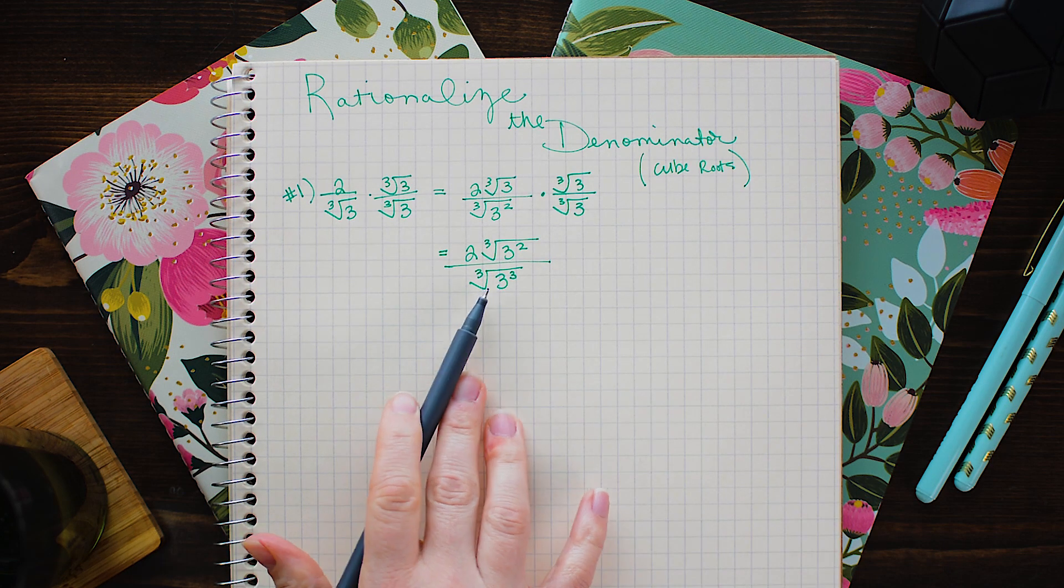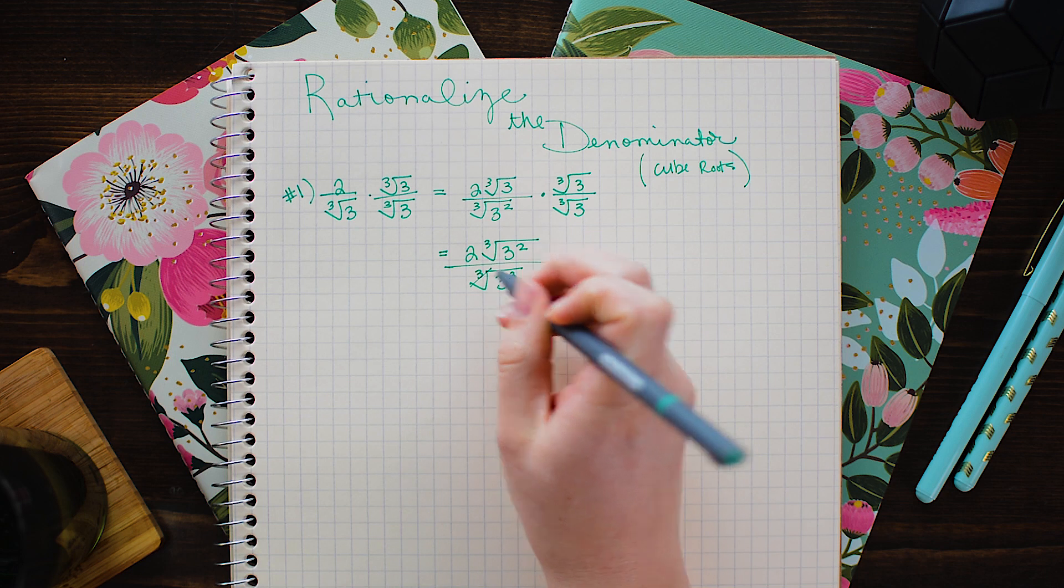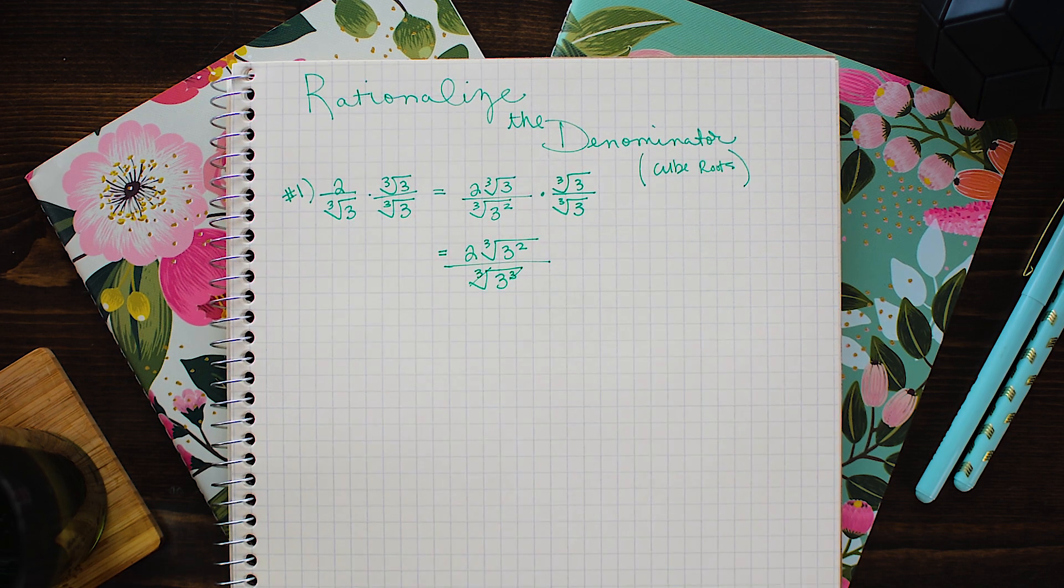Okay now we can reduce this. We know that the cube root of 3 cubed simplifies down to 3.